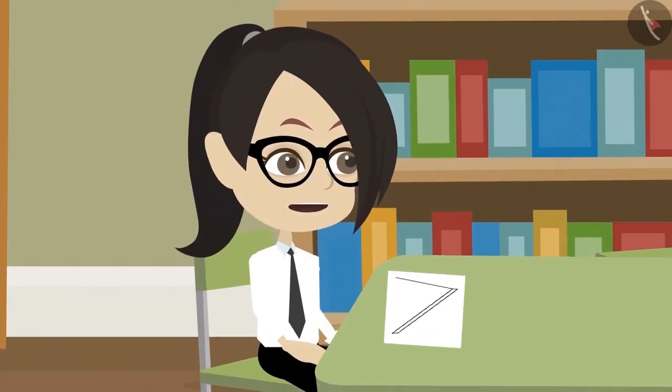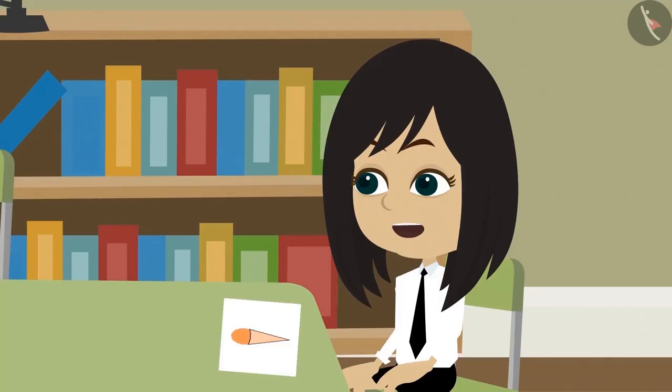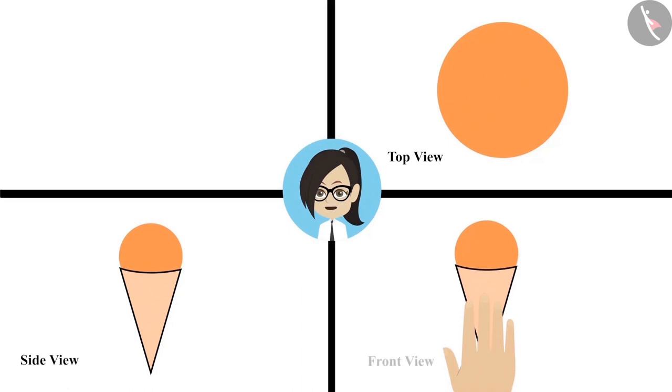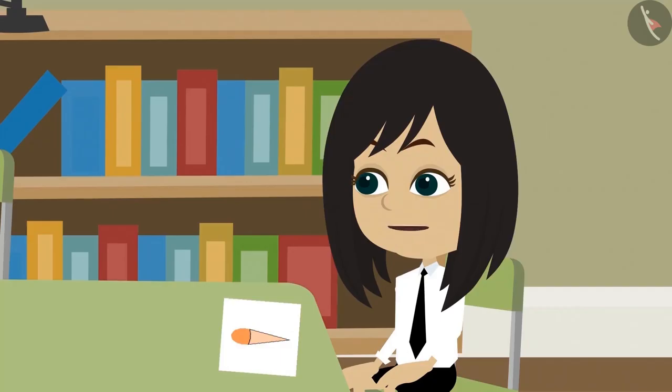I have completed my drawing. Even I am done. Look, first let me see what you have made. Its top view is in the shape of a circle and its side view looks like an ice cream cone with ice cream in it. And its front view is also the same as the side view. This is definitely an ice cream cone. Absolutely right. Now I will try and guess.